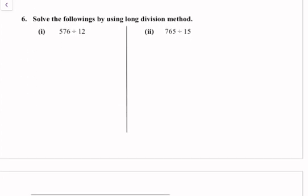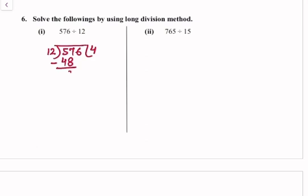Solve the following using the long division method. Question 5: 576 divided by 12. 12 goes into 57 four times — 12 times 4 is 48. 57 minus 48 is 9, bring down 6 to get 96. 12 times 8 is 96. The remainder is 0.